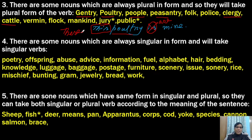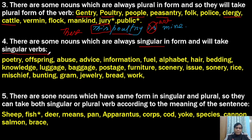For the fourth rule, there are some nouns which are always singular in form and they take the singular verb. These nouns are actually uncountable nouns, and as they are uncountable they are always singular. They would never take S or ES with them, nor would they take 'a' or 'an' before them.